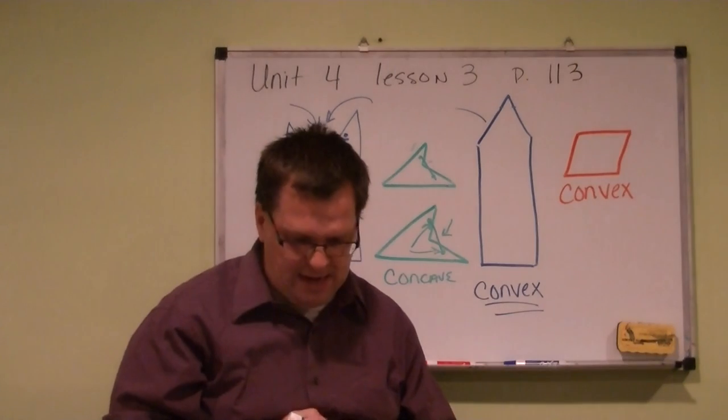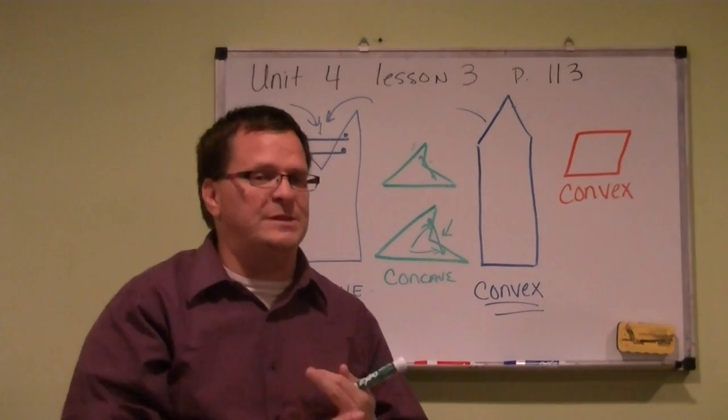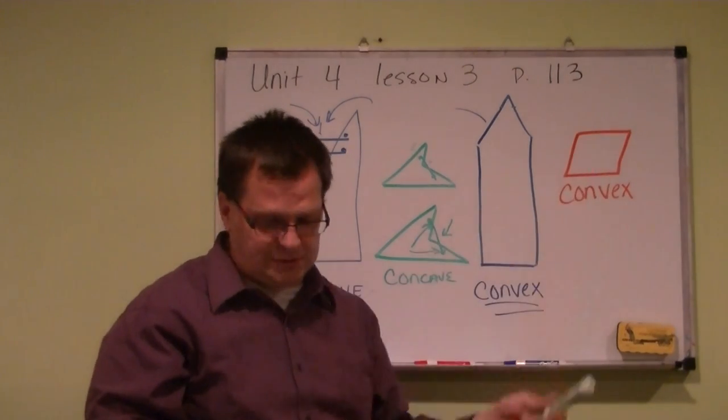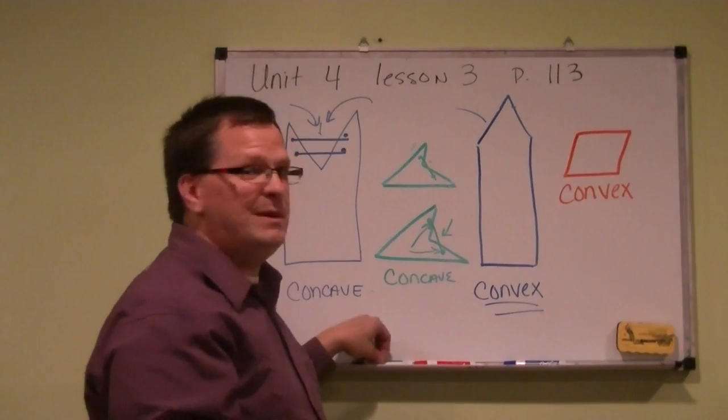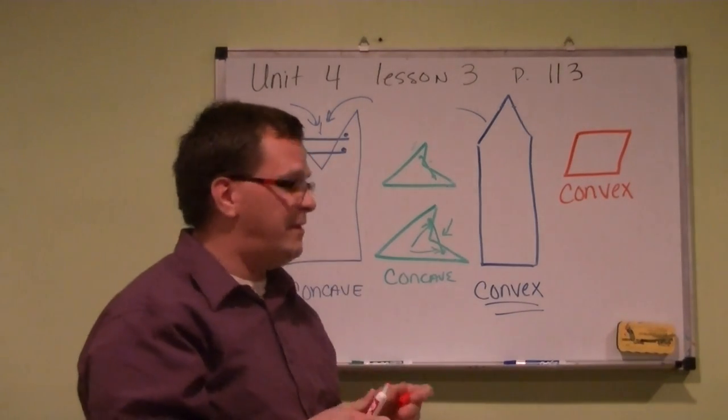Now once you do 10 and 12 on your own, one's going to be convex and one's going to be concave. You have to figure out, does it have an open area, or is it all enclosed? Look at those two different shapes and you'll be able to figure it out. You can come to class with a lot of questions on concave and convex.